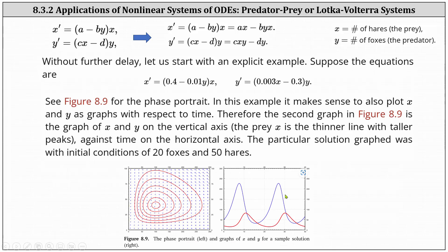Now let's look at a specific example. Let's consider the system x prime equals the quantity (0.4 minus 0.01y) times x, and y prime equals the quantity (0.003x minus 0.3) times y. Below we have a graph of the phase portrait for the system, as well as a graph of x and y.